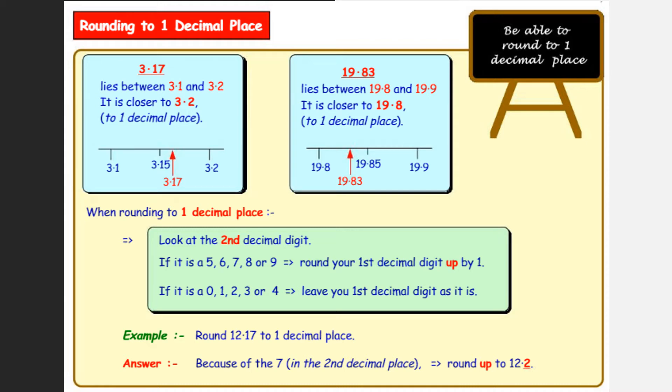Okay, this is similar to what we've done already, but it's slightly trickier because instead of rounding to the nearest whole number, we're rounding to the first decimal place.